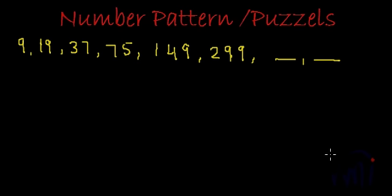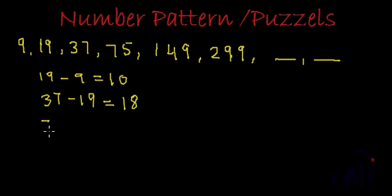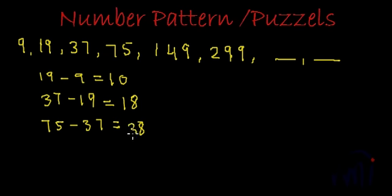So let's find the differences. The difference here is 19 minus 9, which is equal to 10. Then 37 minus 19 is equal to 18. Then 75 minus 37 is equal to 38, and 149 minus 75 gives us 74.